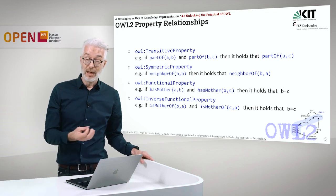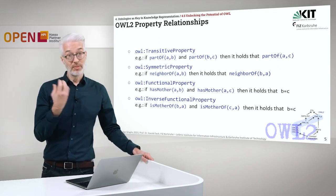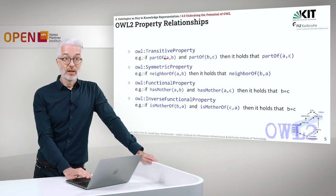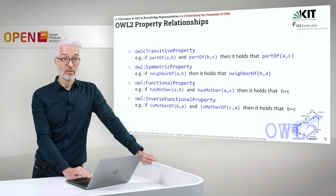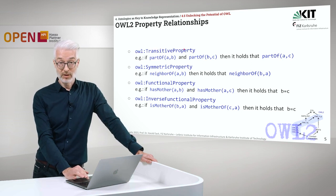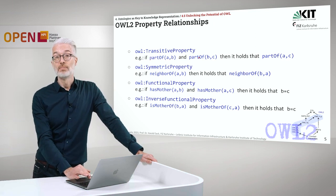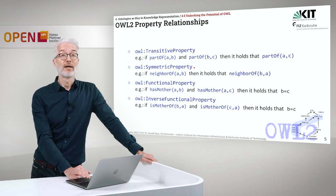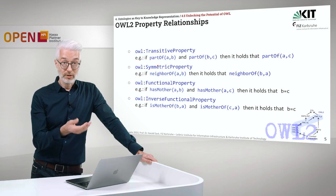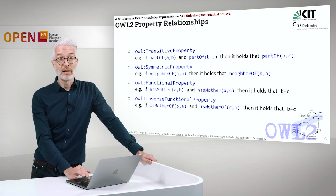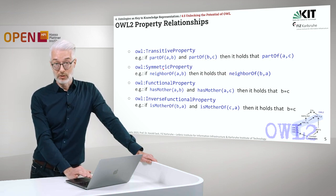Besides that, I can also declare more complex relationships — first of all, transitivity. To declare a property to be transitive, I am using the keyword OWL TransitiveProperty. We all know transitivity: if A is part of B and B is part of C, then it holds that A is also part of C. I can also declare a property to be symmetric. What's symmetric? If A is neighbor of B, then of course B is also neighbor of A. I declare this via OWL SymmetricProperty.